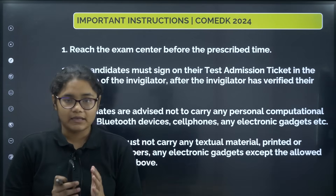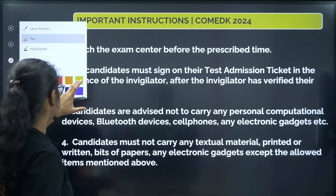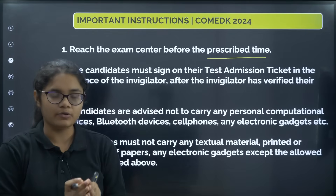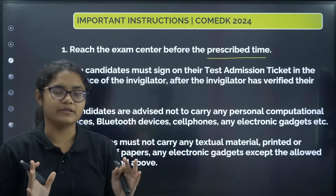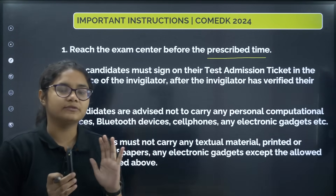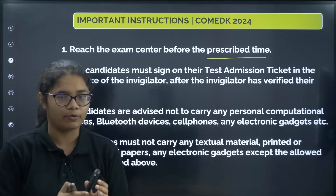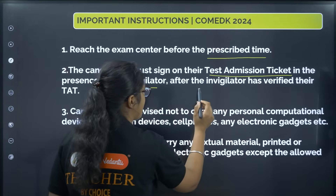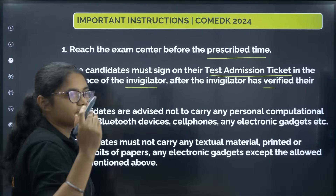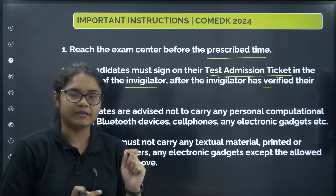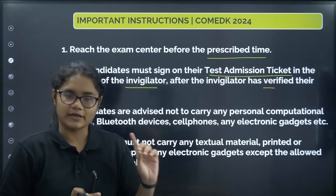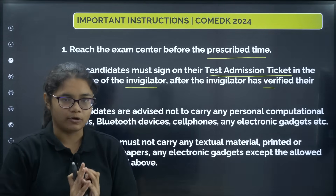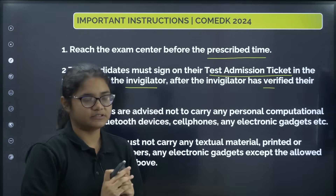Now let us see some very important instructions you must follow. First, reach the exam center before the prescribed time — if you reach late, you will not be allowed in. Make all possible arrangements and reach well in advance so there is no trouble at the last moment. Next, candidates must sign their test admission ticket in the presence of the invigilator after the invigilator has verified their TAT — do not sign it from home before going to the exam hall.